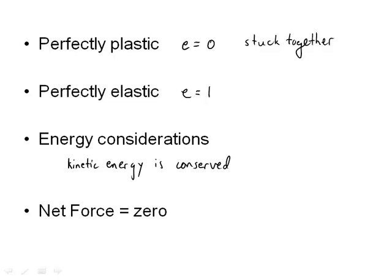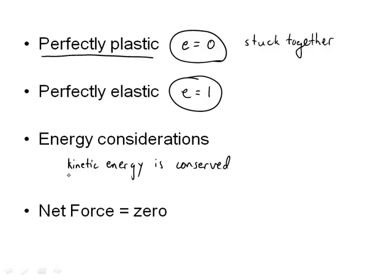Before we begin our discussion on oblique central impact, I want to discuss a couple of terms. We talked about a perfectly plastic collision, where two objects get stuck together and the coefficient of restitution equals zero. We also discussed when the coefficient of restitution equals one — kinetic energy before and after the collision is the same — and that is referred to as a perfectly elastic collision.